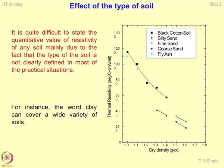The tendency of the material is to achieve a constant thermal resistivity, which is nothing but the resistivity of the minerals. This concept can be utilized for characterization of minerals — not soils — where if the resistivity of individual minerals is known, you can develop a model to find out the mineralogical composition of the soil. This is an interesting area for research.